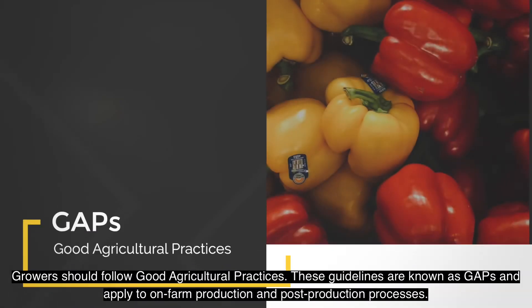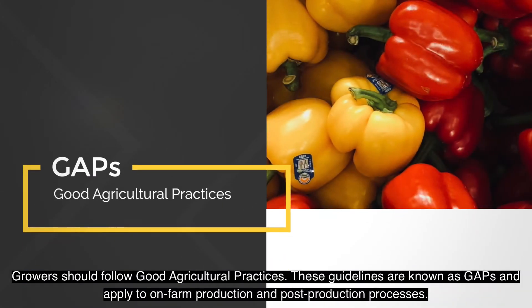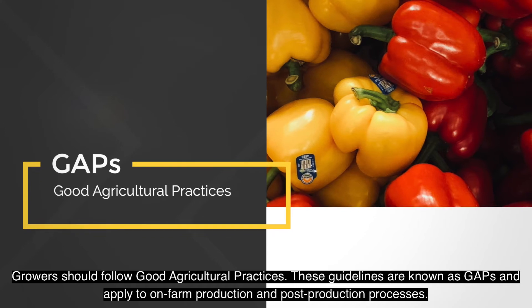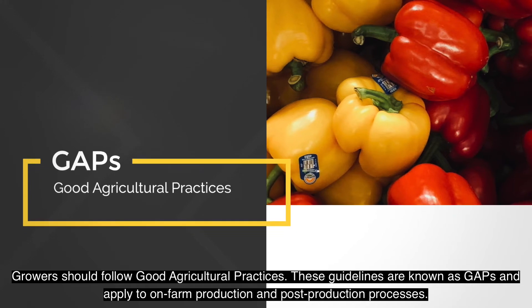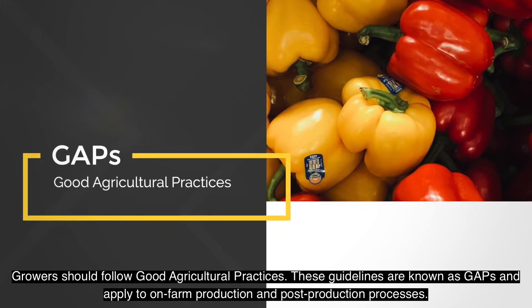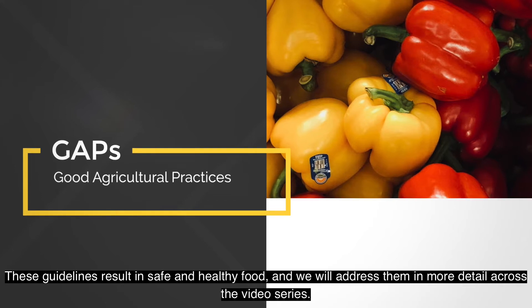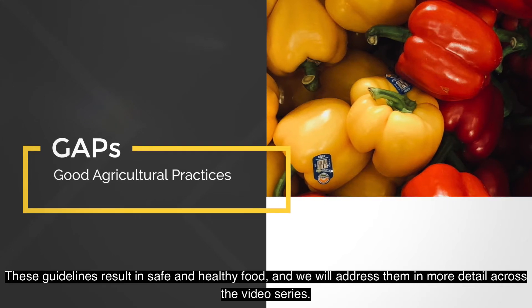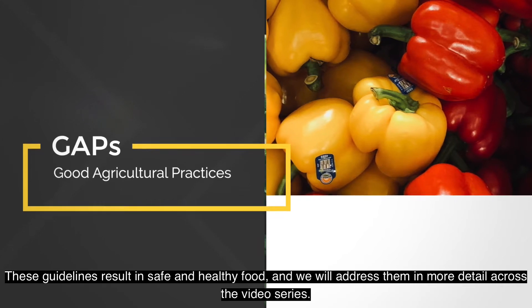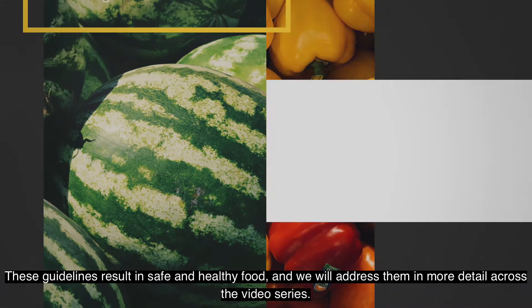Growers should follow Good Agricultural Practices. These guidelines are known as GAPs and apply to on-farm production and post-production processes. These guidelines result in safe and healthy food, and we will address them in more detail across the video series.